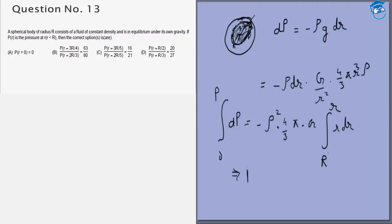So from this we could get p is equal to r squared by 2. So 2 will cancel. 2 by 3 pi G rho squared, capital R squared minus small r squared.